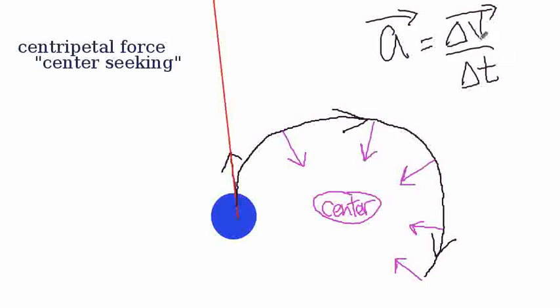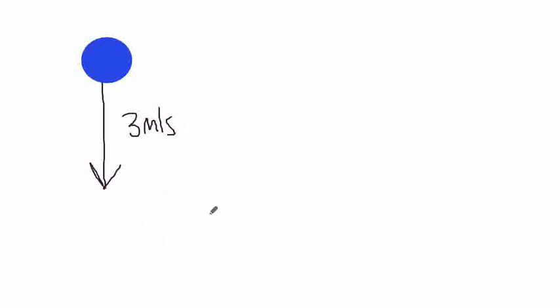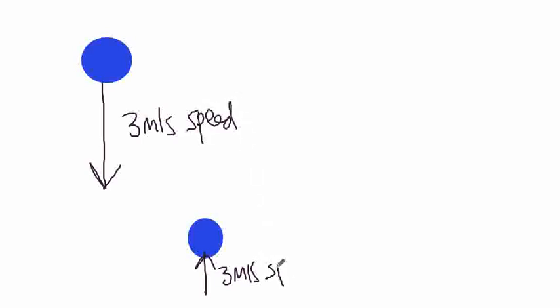Let me give you a quick side tangent to clear this up. Suppose I was bouncing a ball, and suppose the ball moves down at about three meters per second. After the bounce, it is coming up at three meters per second speed. I'm a really good dribbler — it keeps three meters per second down, three meters per second up. Does there exist an acceleration for this process? Yes, it does have an acceleration, even though the speed is the same. Let me show you why.